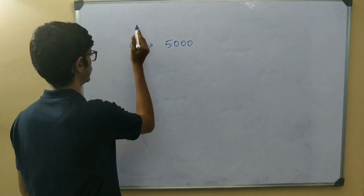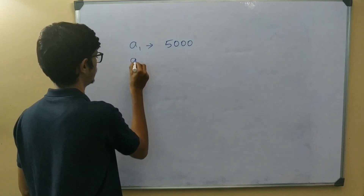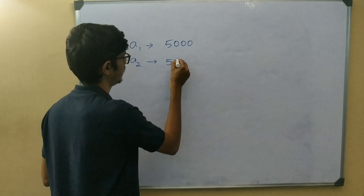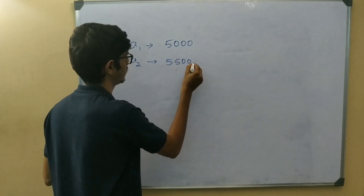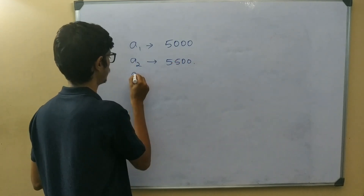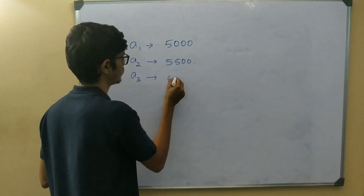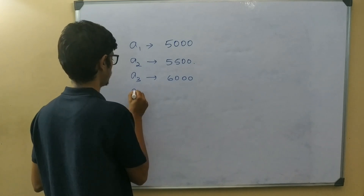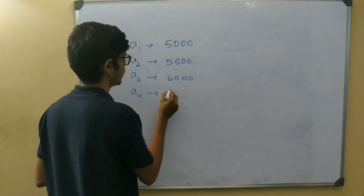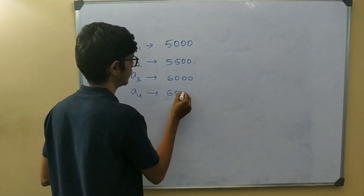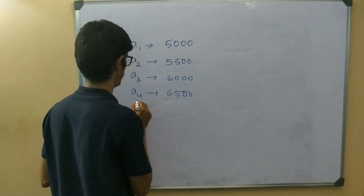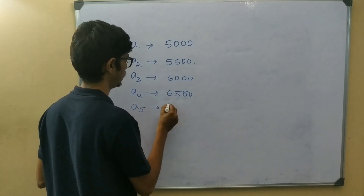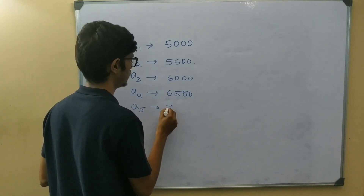So let's say the salaries are: 2,000... 5,000... 3,000... 6,000... 4,000... 6,000... 7,000... 5,000... 7,000. Each one of these values is called a term in the sequence.